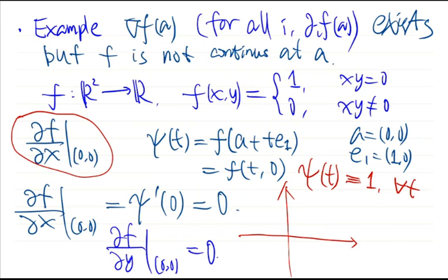We can see this easily: f = 1 on the coordinate axes (x-axis and y-axis), but f = 0 elsewhere. So very close to the origin, there are points with value 0, and also points on the coordinate axes with value 1. This implies that f is not continuous at the origin — a very important difference from single-variable functions.